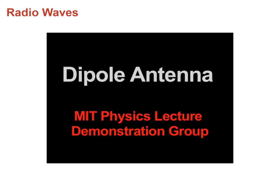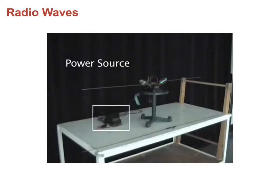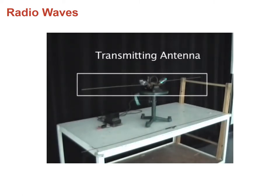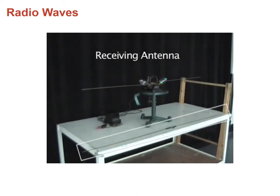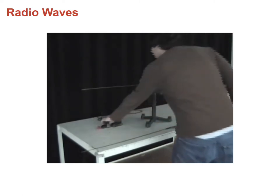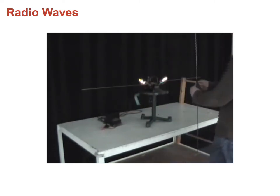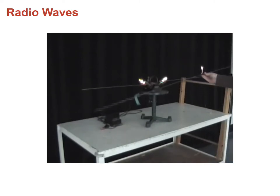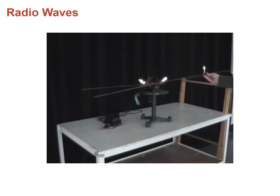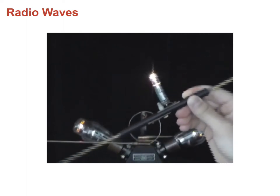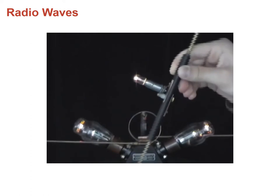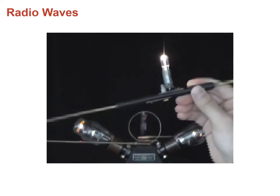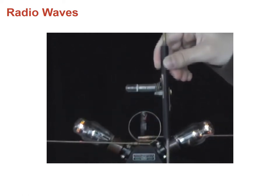This is a demonstration of how the dipole antenna works. We have a power source, a transmitter, a transmitting antenna, and a receiving antenna. When it is turned on, it produces waves. A light bulb switches off when it is not collecting radiation and switches on when it is receiving radiation. To receive radiation, the antenna has to be aligned in the same direction as the incoming wave. When the antenna is vertical but the wave is along the horizontal, there is no wave being received.